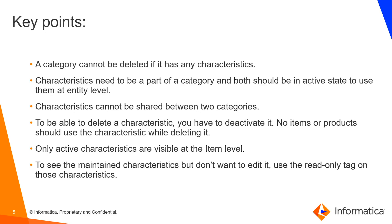To delete a characteristic, we first have to deactivate it, and no item or product should be present under that particular product or item level. Once removed, we can delete the characteristic. Only active characteristics can be seen at the item level. To see maintained characteristics without editing, there is a read-only option in the characteristics — by enabling it, we can give a privilege to only read the particular characteristic at the UI level without having any option to edit it.